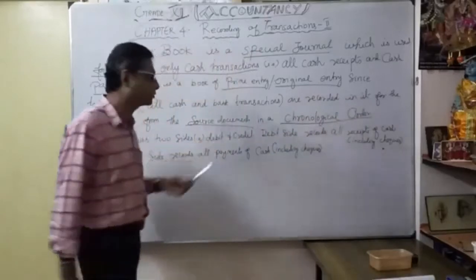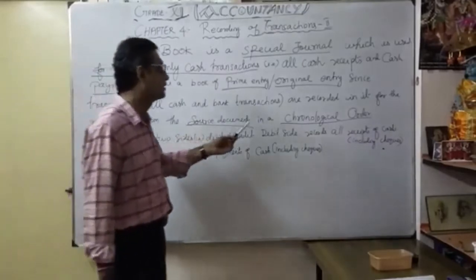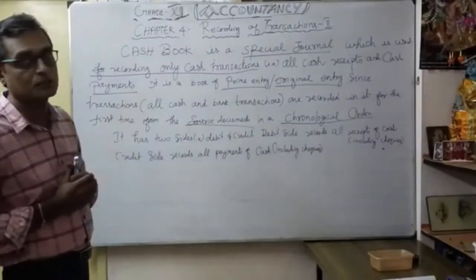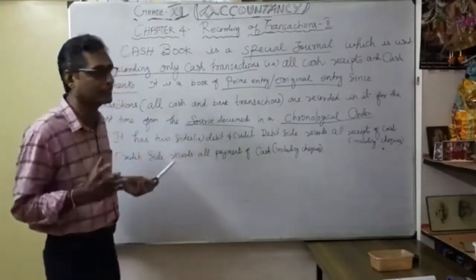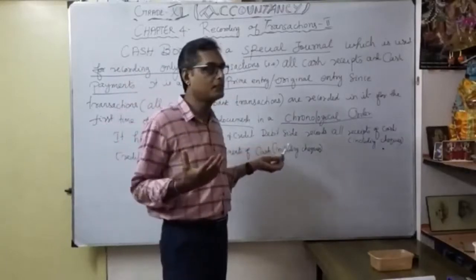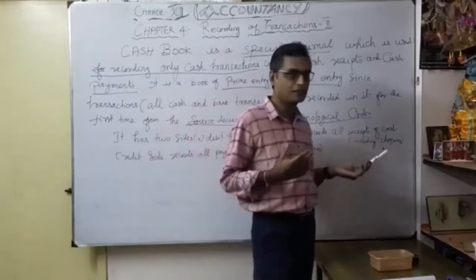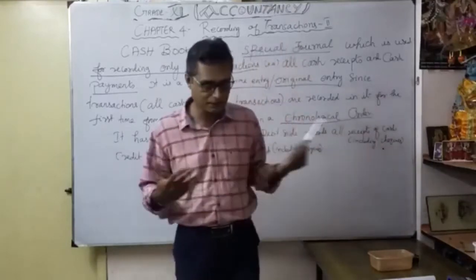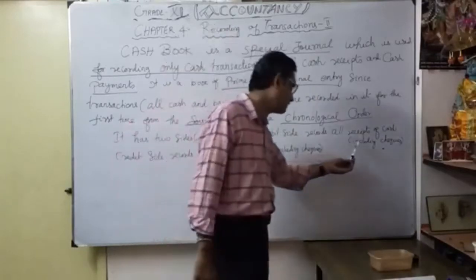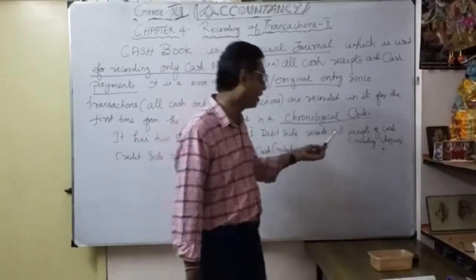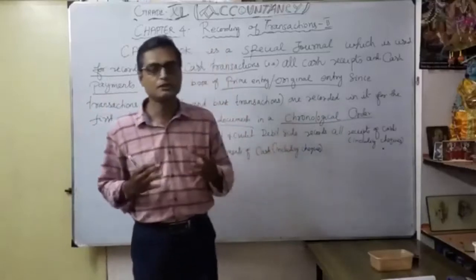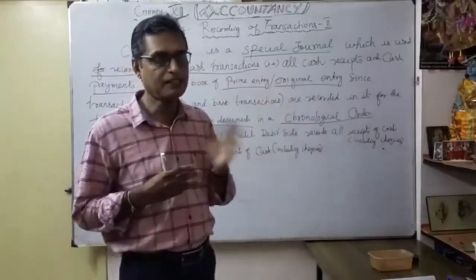All cash transactions are recorded for the first time with the help of source documents in chronological order. The cash book has two sides: debit and credit — same as a ledger. The debit side records all receipts of cash including cheques; the credit side records all payments of cash including cheques. So debit side consists of all receipts of cash, and credit side consists of all payments.